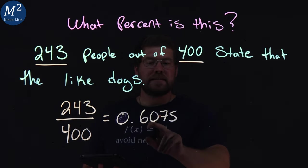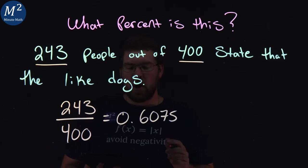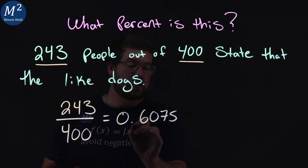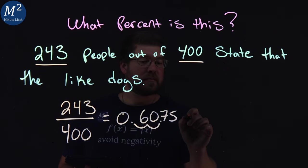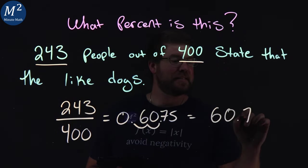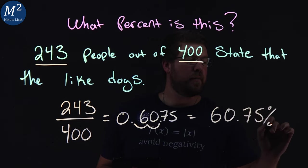So 0.6075 as a percent, we want to move the decimal place over two spots. One, two, right there. And that decimal converts to be 60.75 percent.